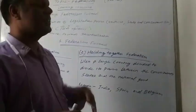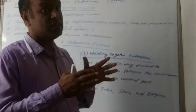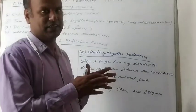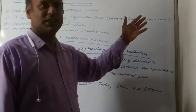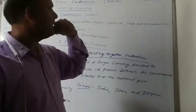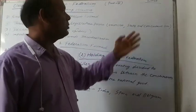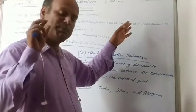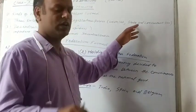The next one is the State List. The State List contains subjects on which only the state government makes laws. For example, agriculture, commerce, and trade. These are related to state government subjects. That is why only the state government makes laws on these particular subjects.